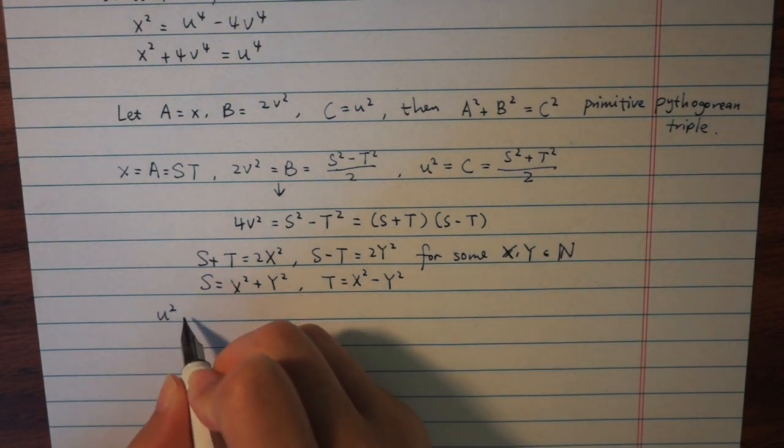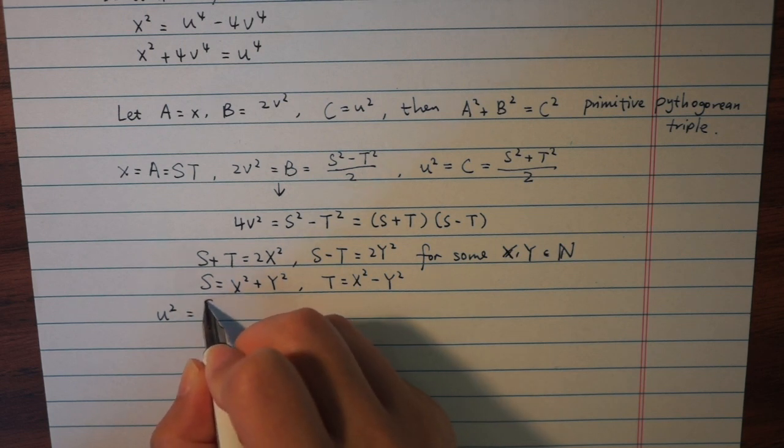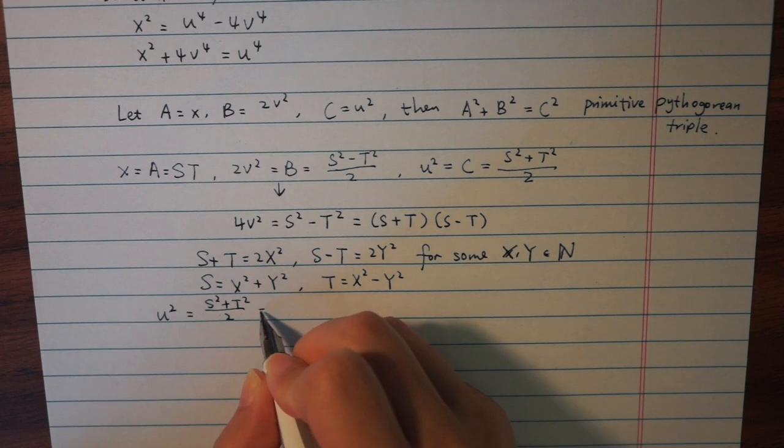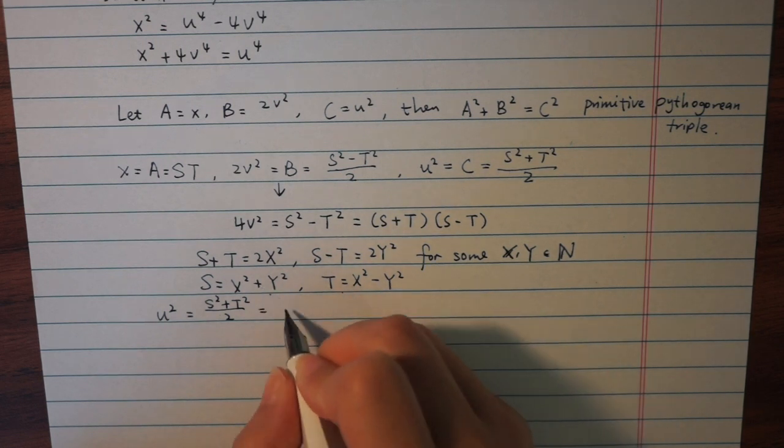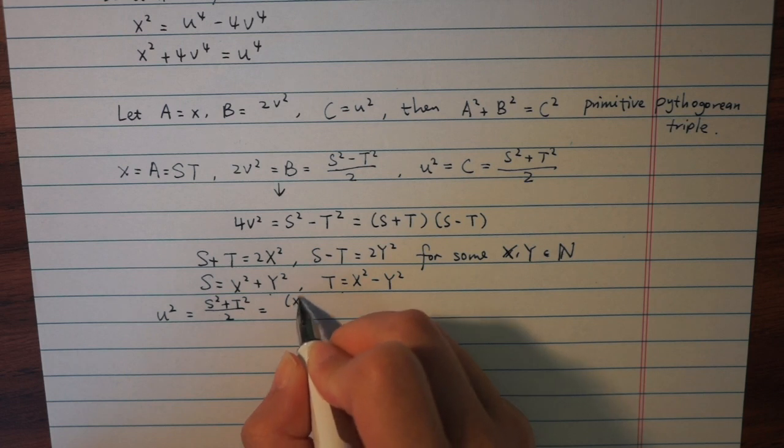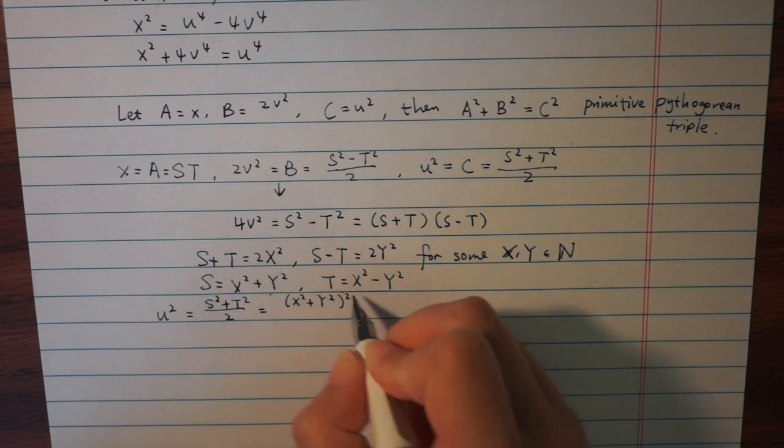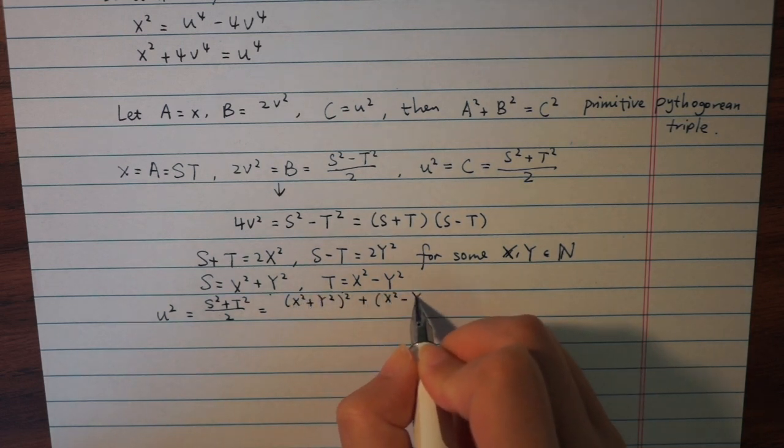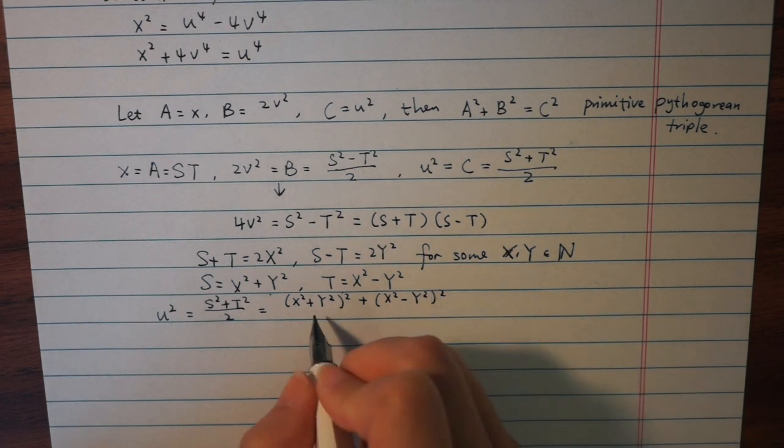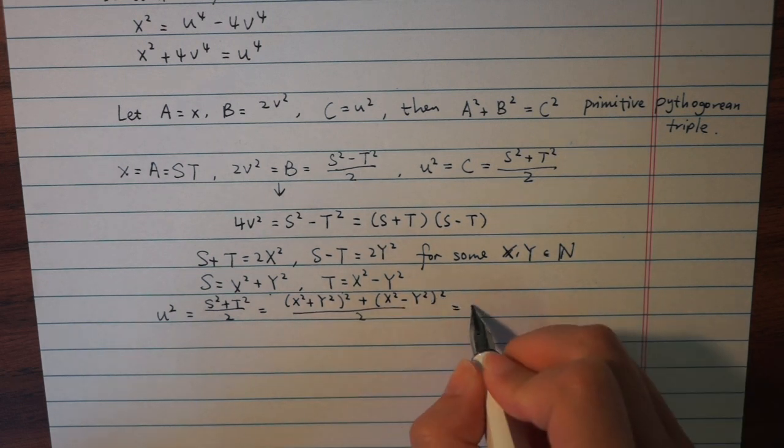And then substituting these into the formula for u squared, it gives us u squared equals capitalized S squared plus capitalized T squared over 2, which if you substitute those formulas for capitalized S and T, you get that u squared is actually equal to X to the fourth plus Y to the fourth.